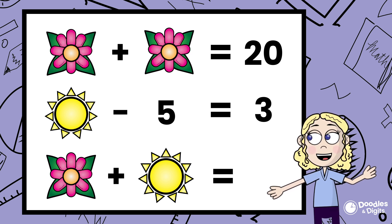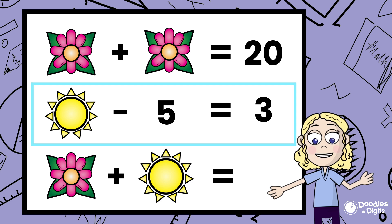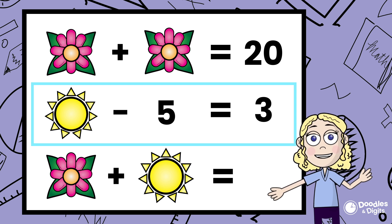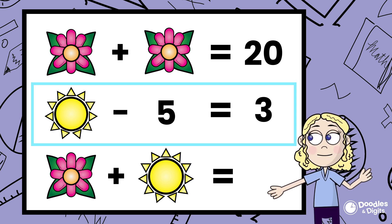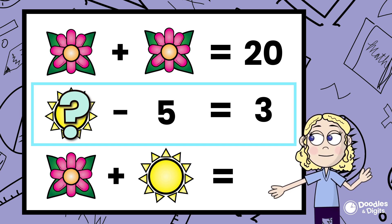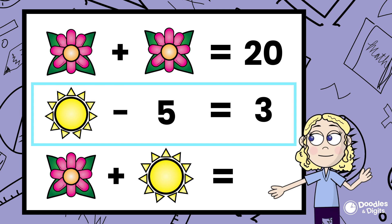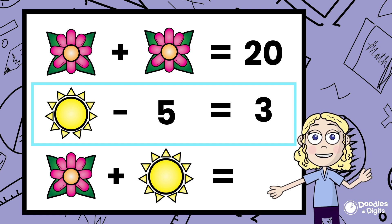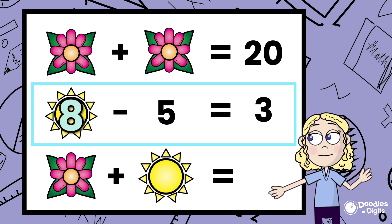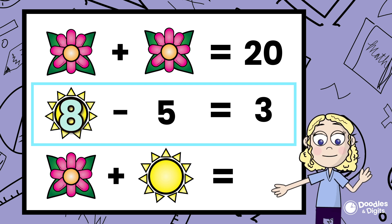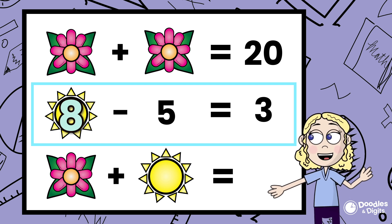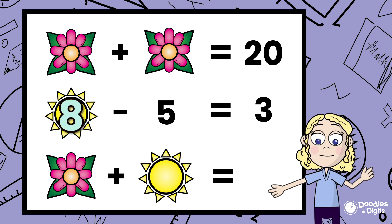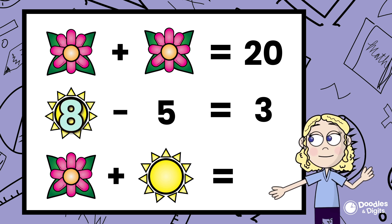All right, now go on to the next problem. Sun minus 5 equals 3. I'll think to myself, what number minus 5 equals 3? Do you know? If you put 8, then that's correct. 8 minus 5 equals 3. So we now know the sun equals 8 and we know the flower equals 10.